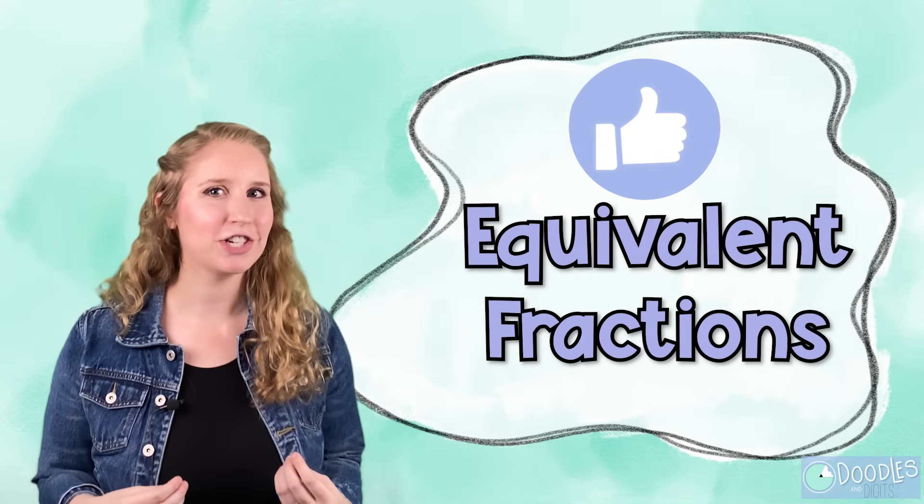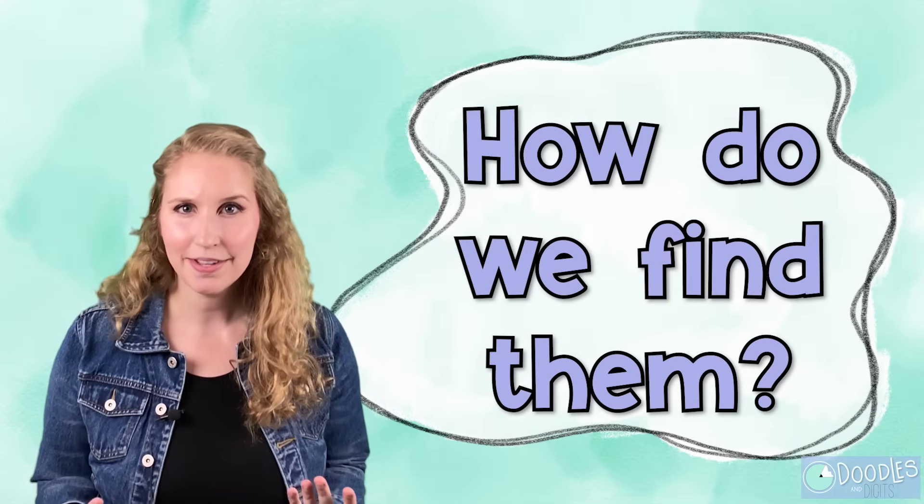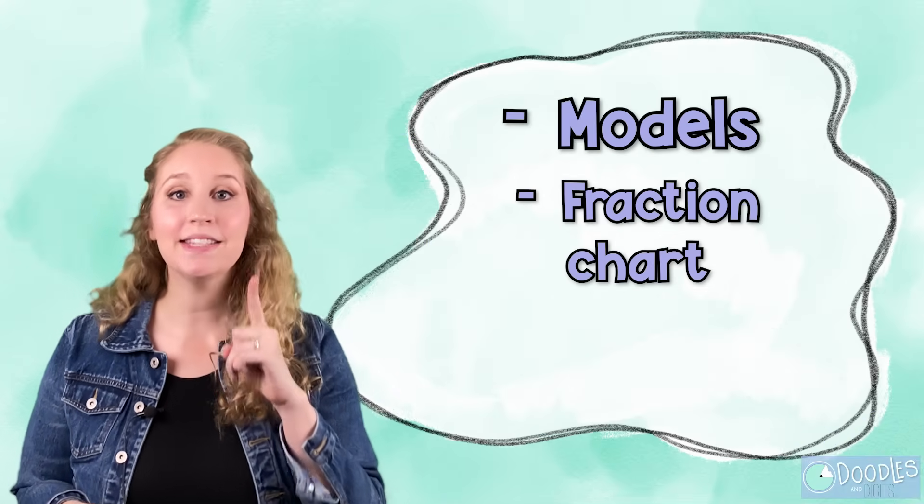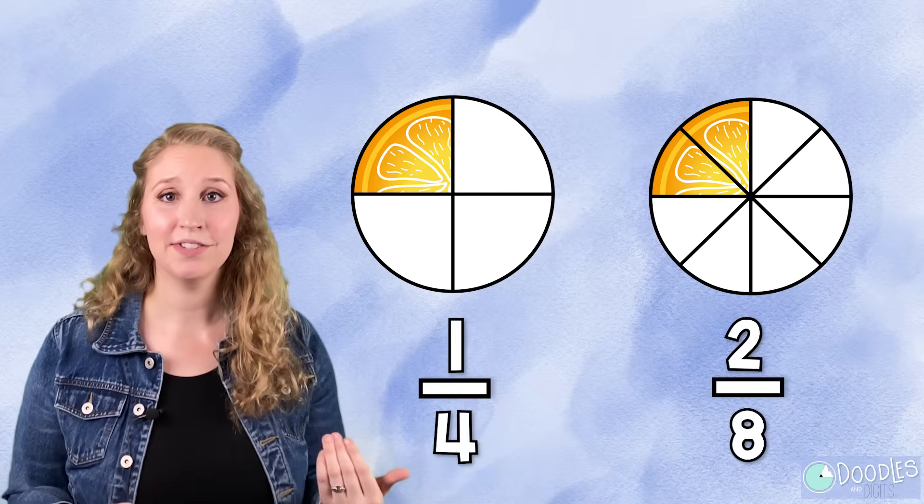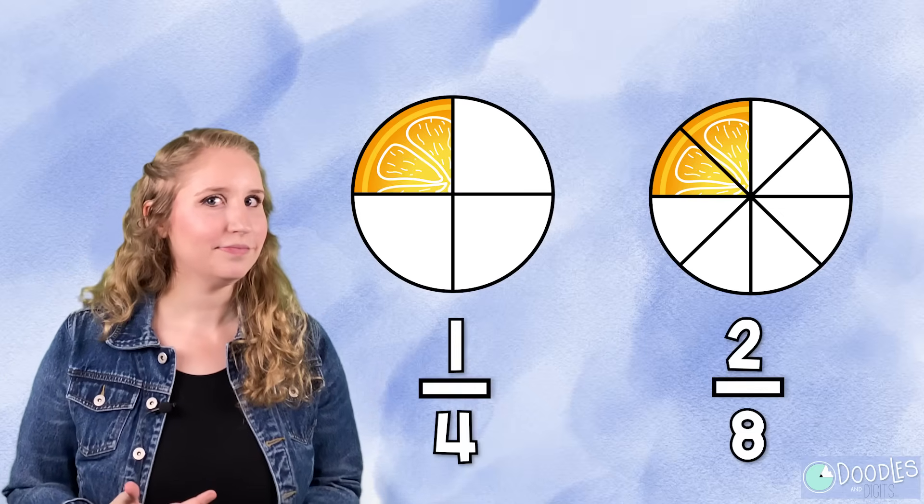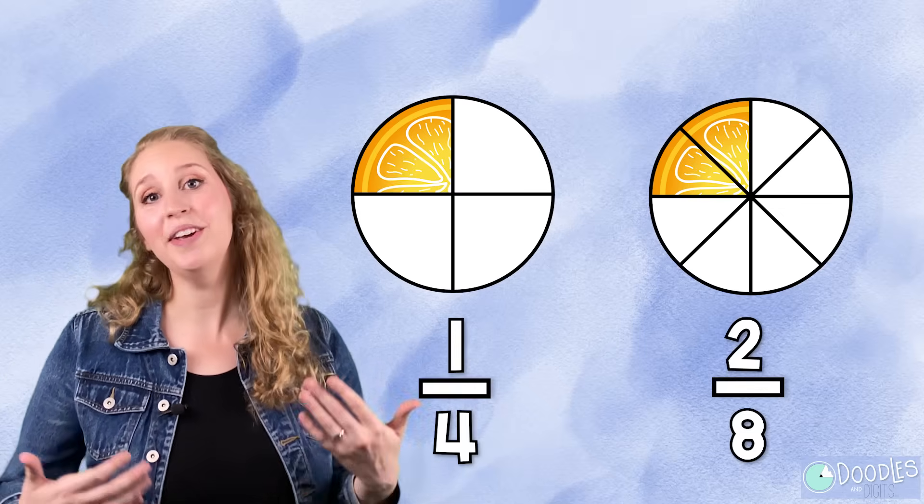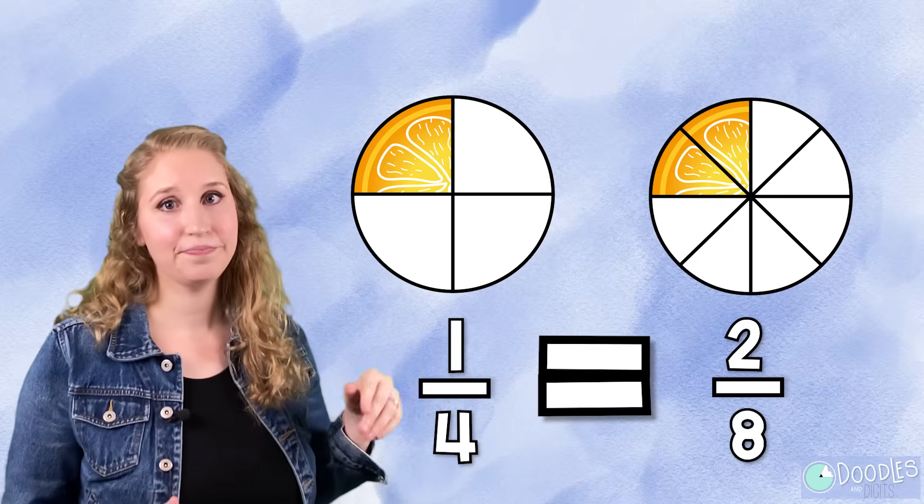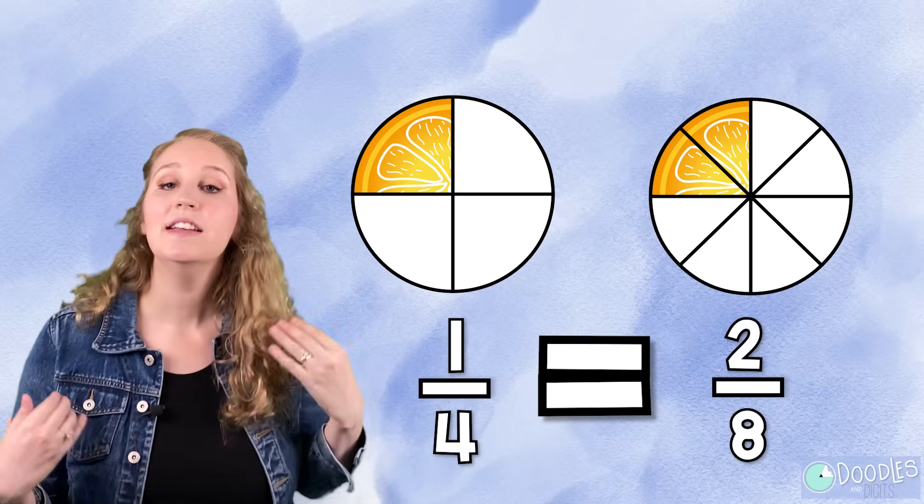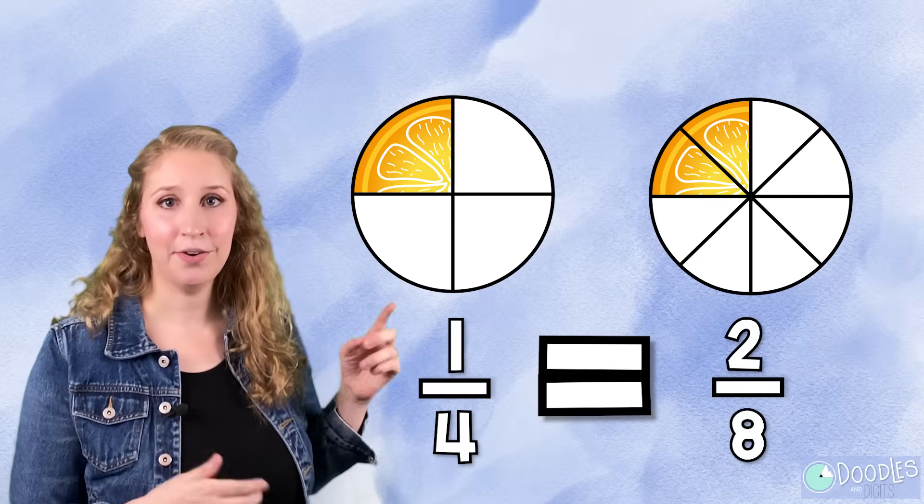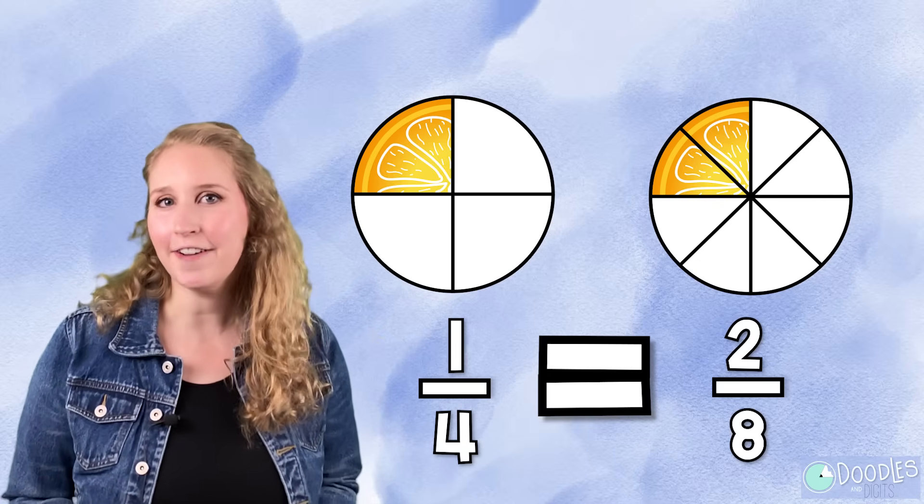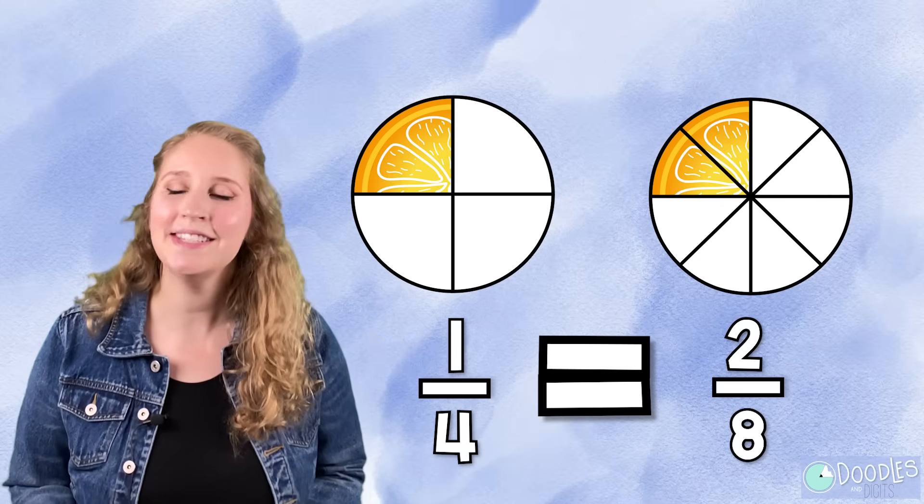Now that we know what equivalent fractions are, how do we find them? There are actually a few different ways that you can find equivalent fractions. Let's first look at this right here. We're going to look at some models. What do you notice is going on? That's right, you can actually look at a model and cut it into more pieces to find a different fraction. When you cut that same model into different pieces, you're actually finding an equivalent amount with a different denominator.